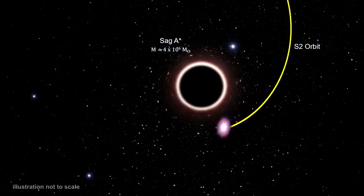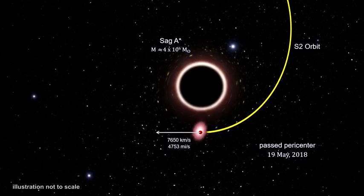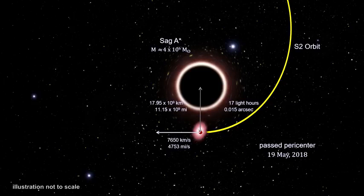On May 19th, it reached the closest approach — pericenter. At that point, it was traveling at 7,650 kilometers per second, or 4,753 miles per second. That's almost 3% of the speed of light. Its distance from the black hole was just 18 billion kilometers, or 11 billion miles — only 120 times our distance from the sun. The separation on the sky between the two points was just 15 milli-arc-seconds.